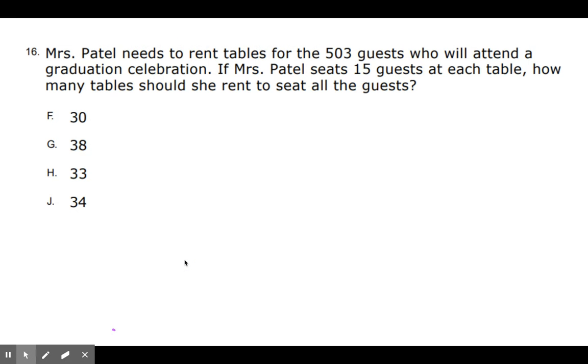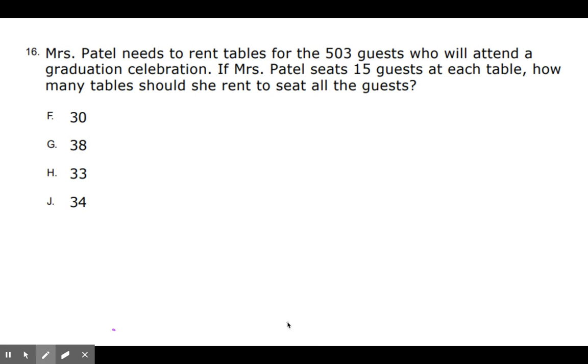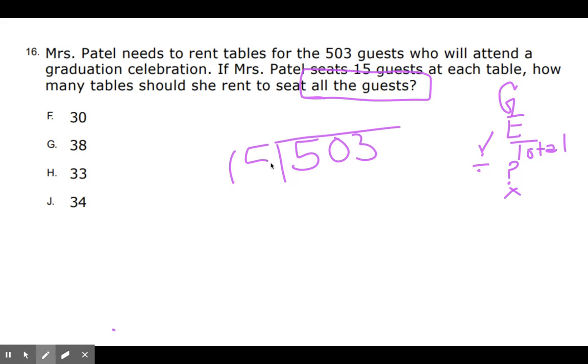Next one. Number 16. Mrs. Patel needs to rent tables for the 503 guests who will attend a graduation celebration. Sounds amazing. Wear your mask. Stay six feet apart. If Mrs. Patel seats 15 guests at each table, how many tables should she rent to seat all the guests? To seat all the guests, Jerry. All of them. Okay, I don't know what to do here. So I'm going to bust out my GET strategy. The T is for total. And if I know the total, I'm going to be dividing. If I don't know the total, then I'm going to be multiplying to find it. Do I know the total number of guests? Yes, I do.